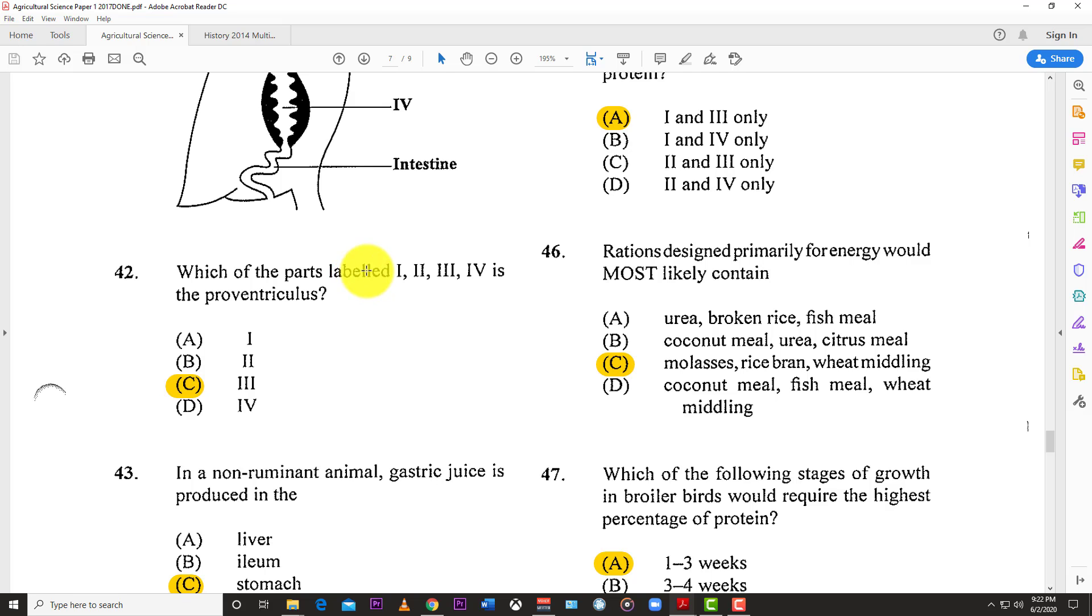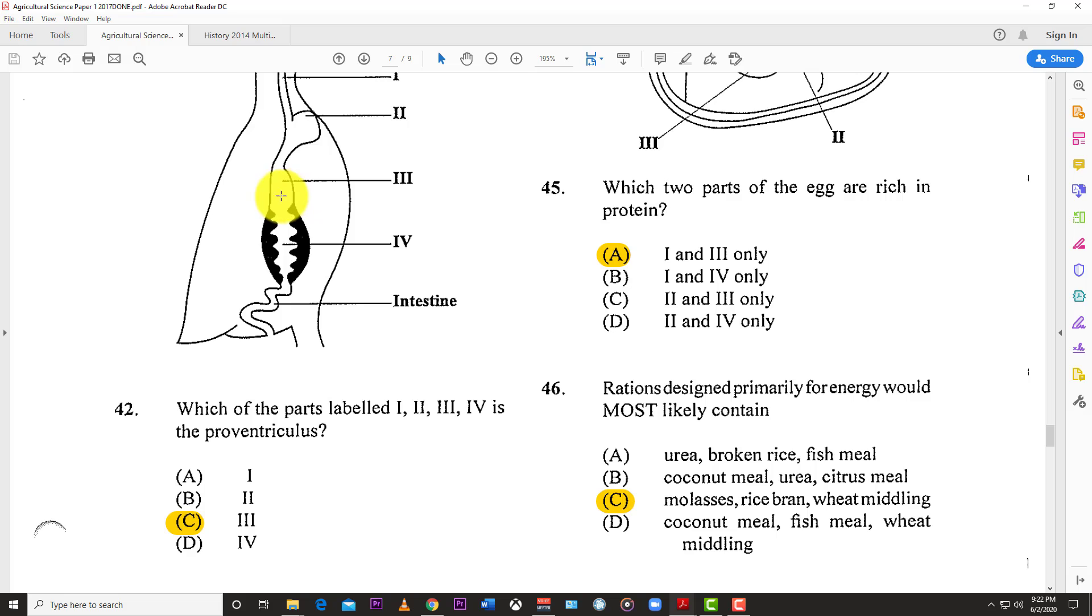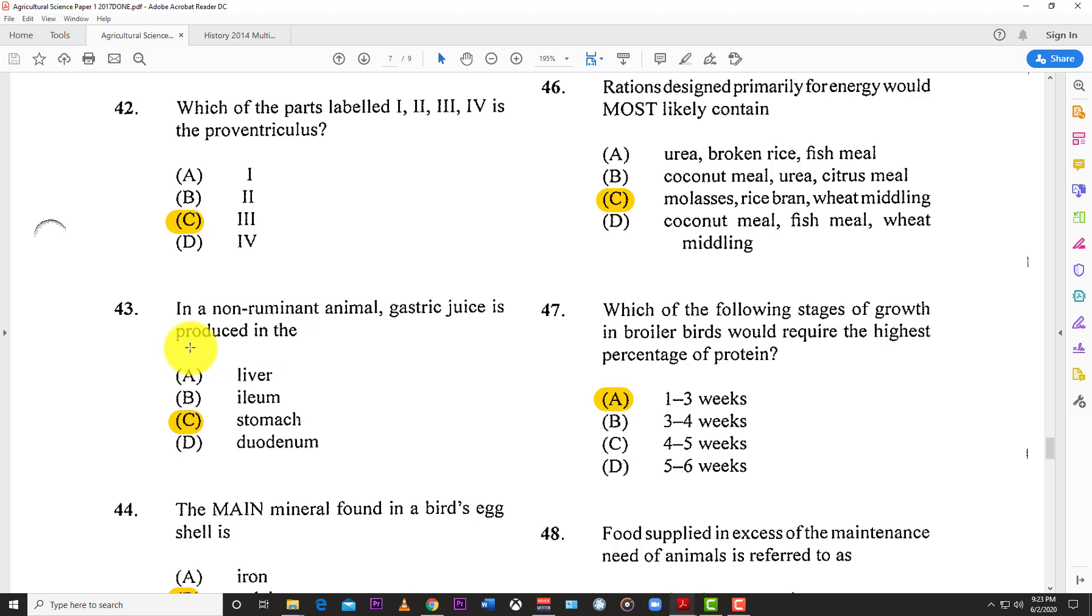Number forty-one: Which section of the digestive tract of a rabbit is responsible for pellet formation? The answer is C, the cecum. Number forty-two: You have this diagram. Which part labeled one, two, three, or four is the proventriculus? The answer is C, number three. That's the crop.